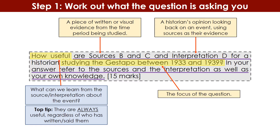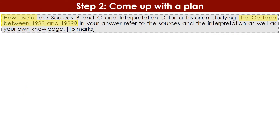The parts of the question underlined in purple are the bits that are always going to be the same every year. You will always get sources B and C and interpretation D, and it will always tell you to refer to the sources and the interpretation as well as your own knowledge. So when students look at this question and think 'that's a huge question,' actually when you highlight just the focus — that's the bit that changes each year — it's just basically one sentence.